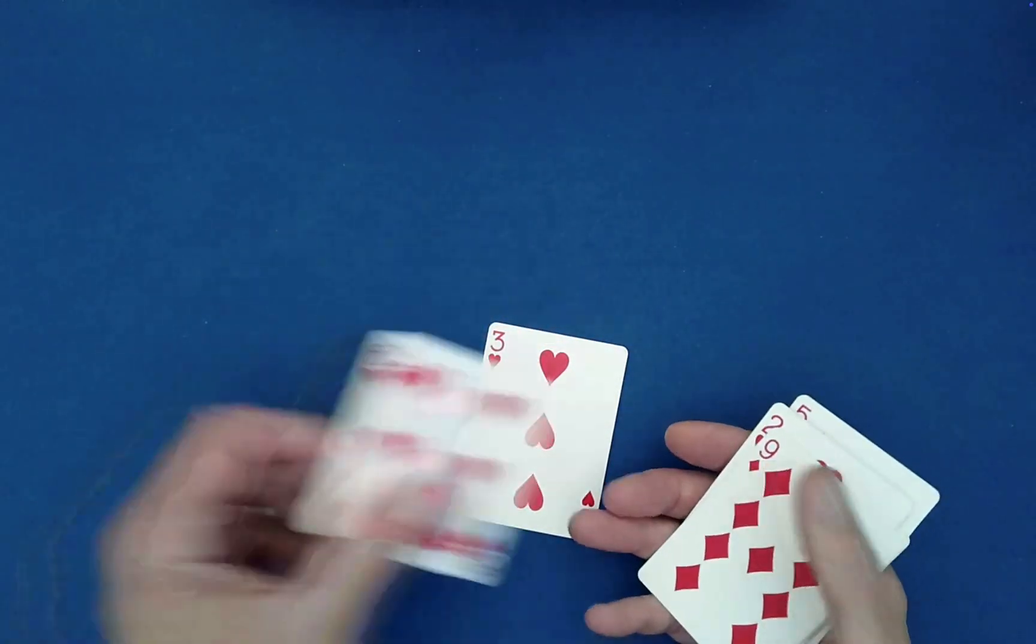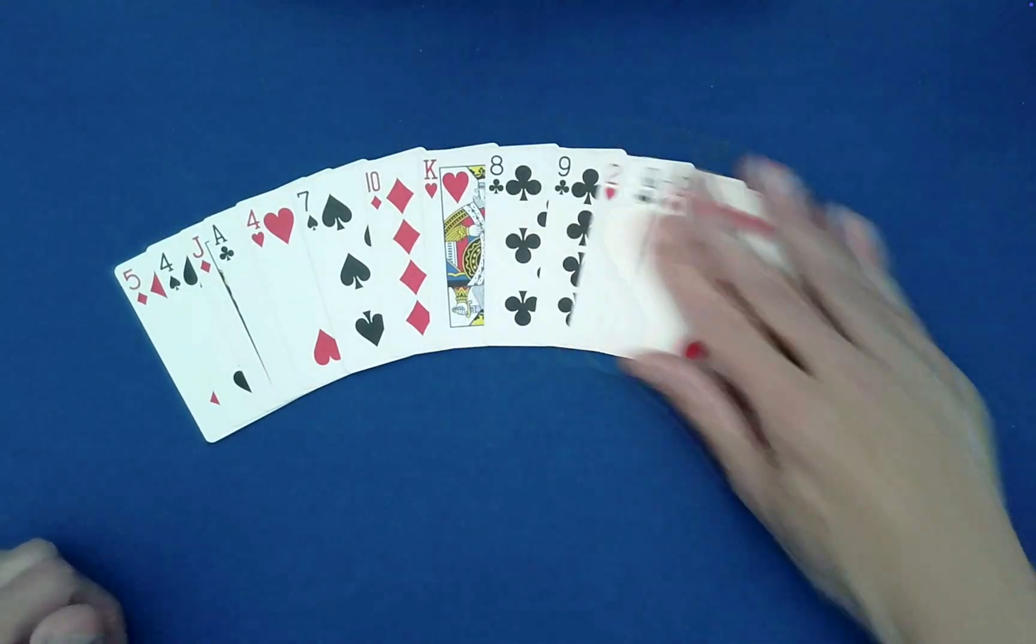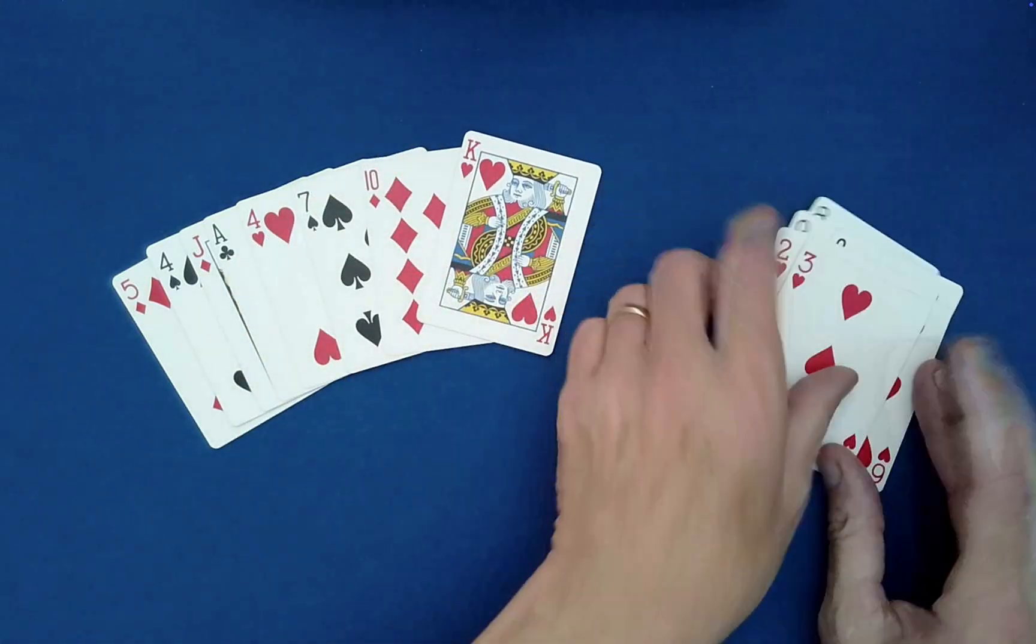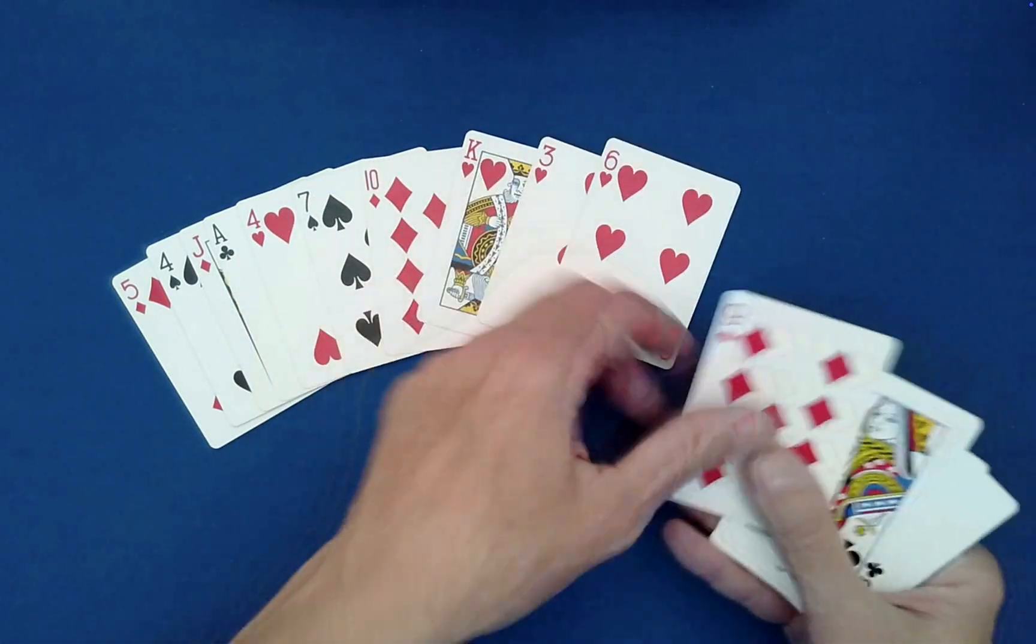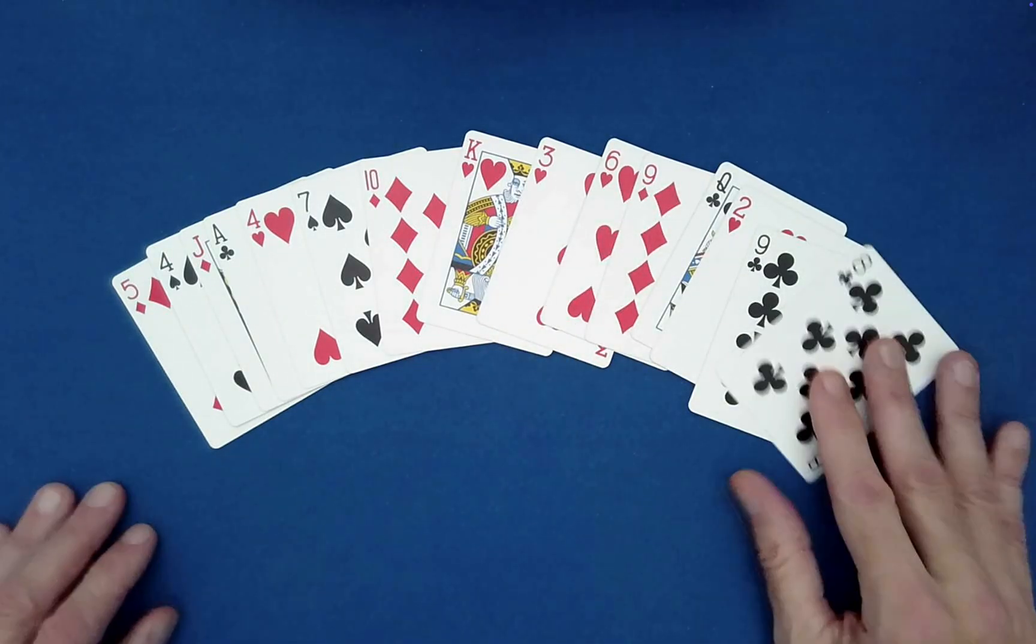And then the king in the middle and then go around in the same order. And so this will now be quote, a mirrored packet relative to the center. Okay. There you go. I picked them up in the opposite order there. Okay. That's how I should have picked them up.